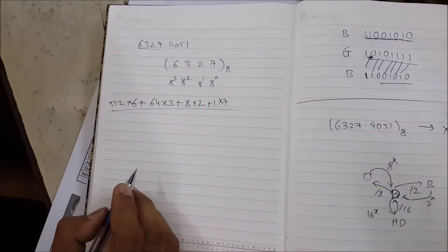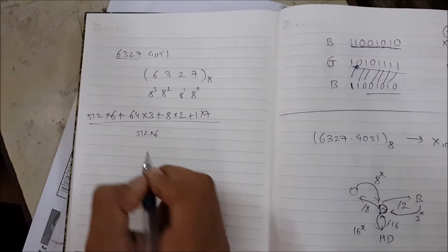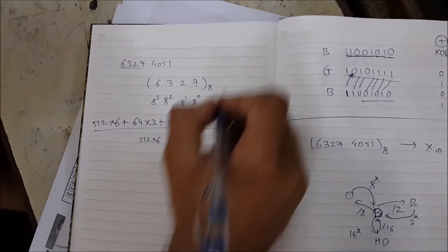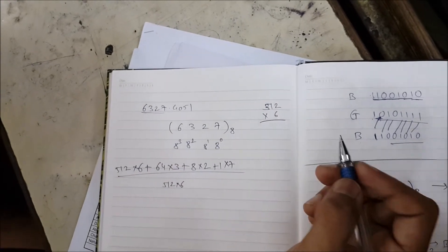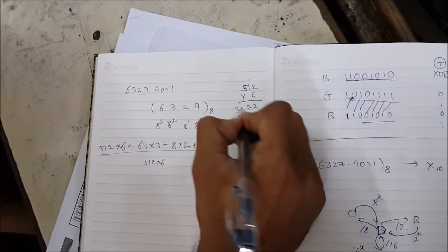And then we need to add all these numbers. So 512 times 6 comes out to be... let's find it. 512 times 6 is something in the 3000s. Right, so it is 3072.